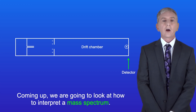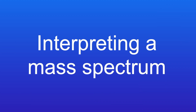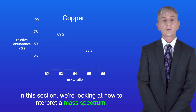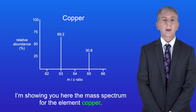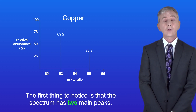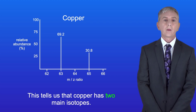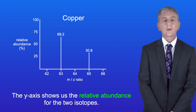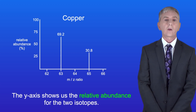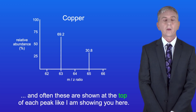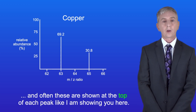Now we're going to look at how to interpret a mass spectrum. I'm showing you here the mass spectrum for the element copper. The spectrum has got two main peaks, which tells us that copper has two main isotopes. The y-axis shows us the relative abundance for the two isotopes, given as a percentage of the total, and often these are shown at the top of each peak.